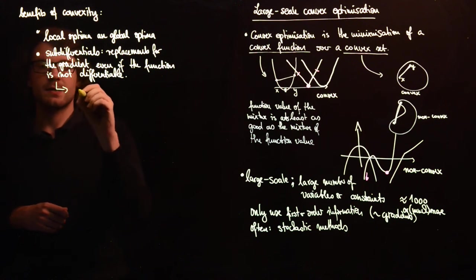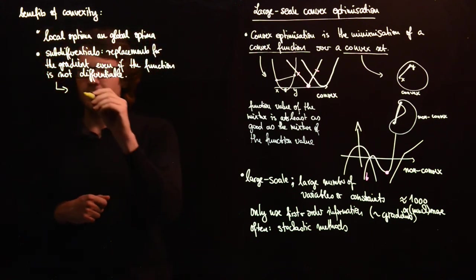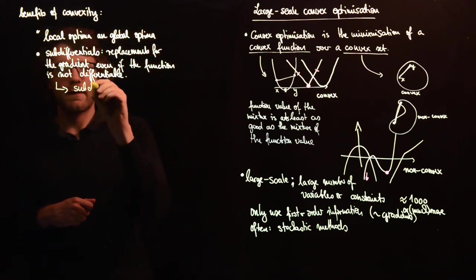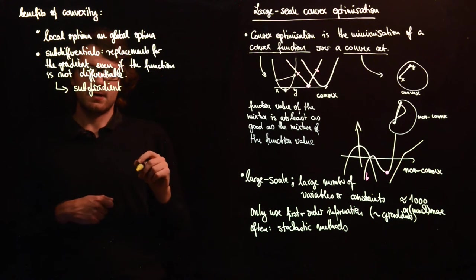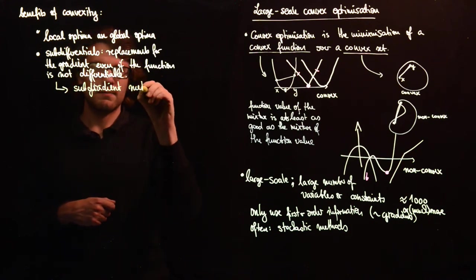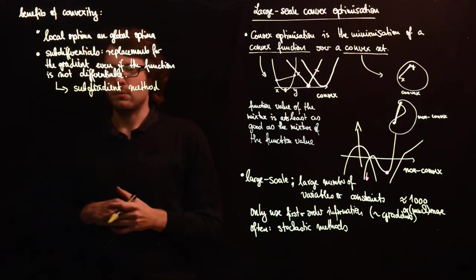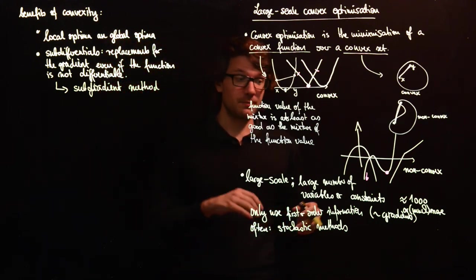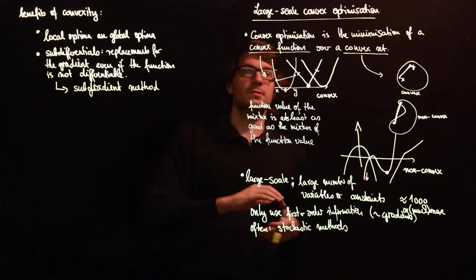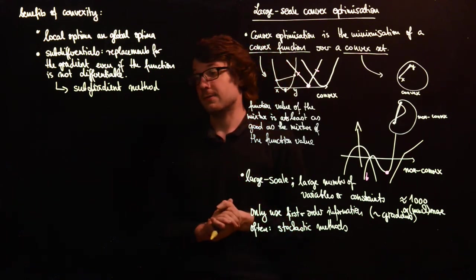And this leads us directly to one of the first optimization methods, the so-called sub-gradient method, and we will analyze this, which uses the sub-gradient and therefore allows you to even minimize non-differentiable functions.